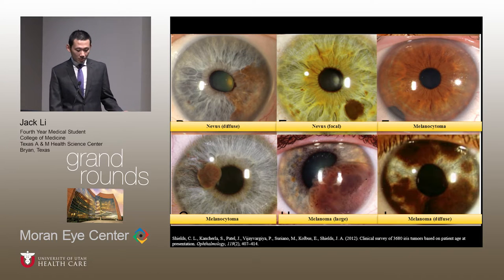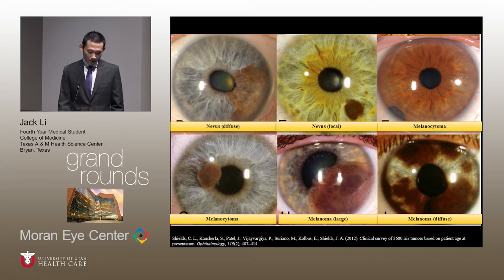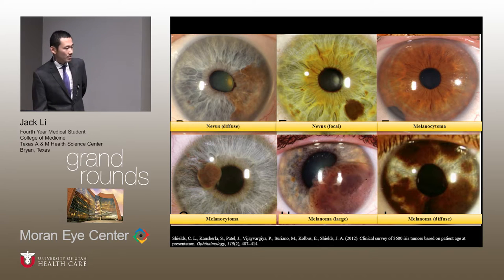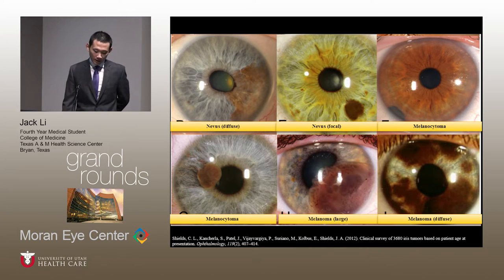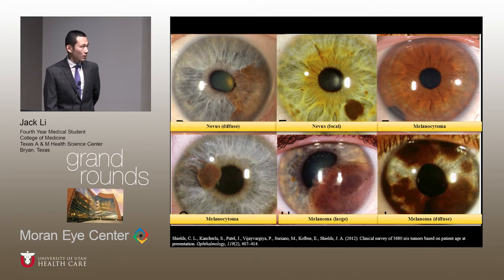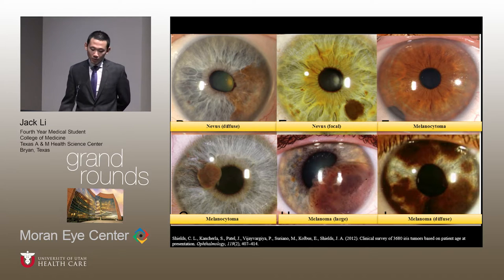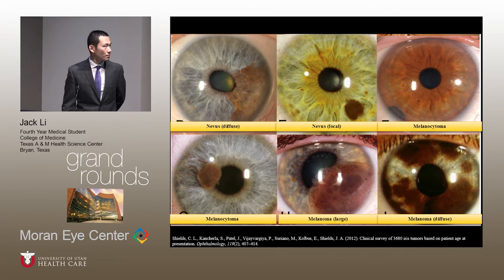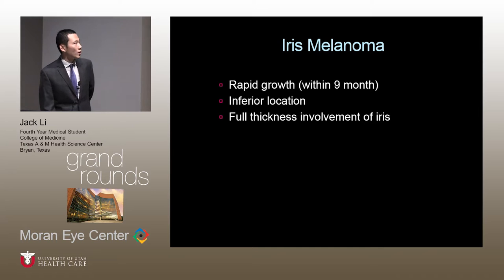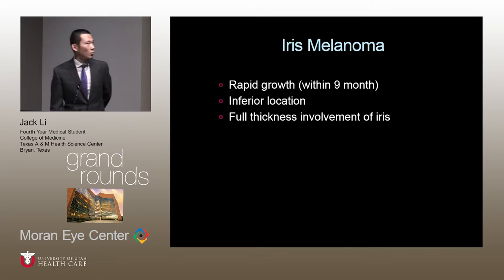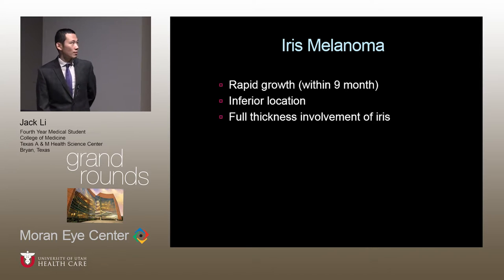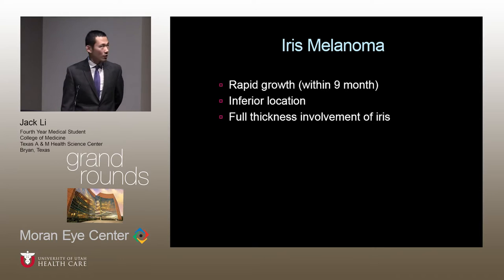Iris melanoma is the true malignant lesion of the iris. Characteristics include typical location in the inferior quadrant, invasion of approximately 2.5 millimeters into the iris on average, and association with corectopia, ectropion uveae, hyphema, glaucoma, and extraocular extension. In our case, features pointing toward a malignant lesion include rapid growth within nine months, inferior location, and apparent involvement of the entire thickness of the iris.